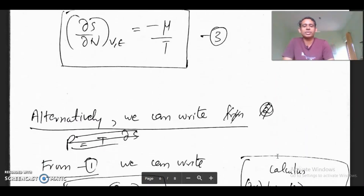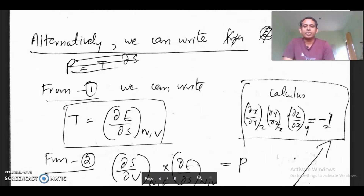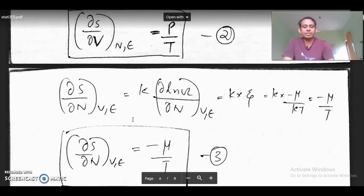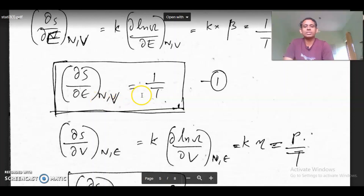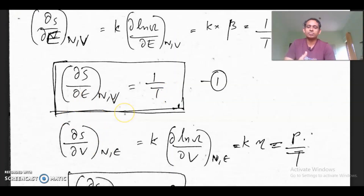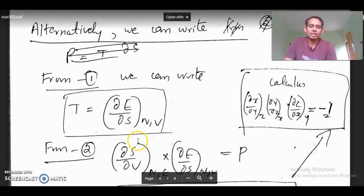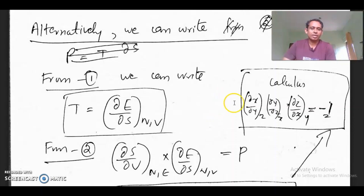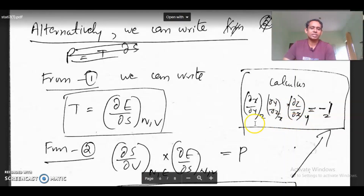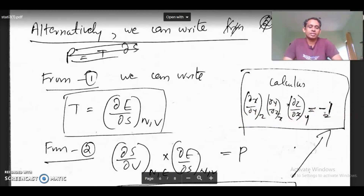There is another way — another set of equations. Alternatively, from equation 1, ∂S/∂E at constant N and V equals 1/T. Let me invert this equation: T equals ∂E/∂S at constant N and V. Using an important relation in calculus — (∂X/∂Y)_Z · (∂Y/∂Z)_X · (∂Z/∂X)_Y equals minus 1 — we can form a similar relation among S, V, and E.